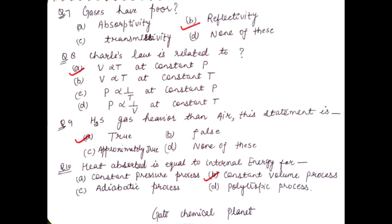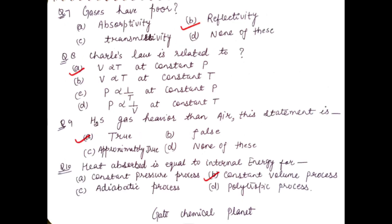Next question: gases have poor — (a) absorptivity, (b) reflectivity, (c) transmissivity, (d) none of these. Gases have poor reflectivity, so option B is correct.